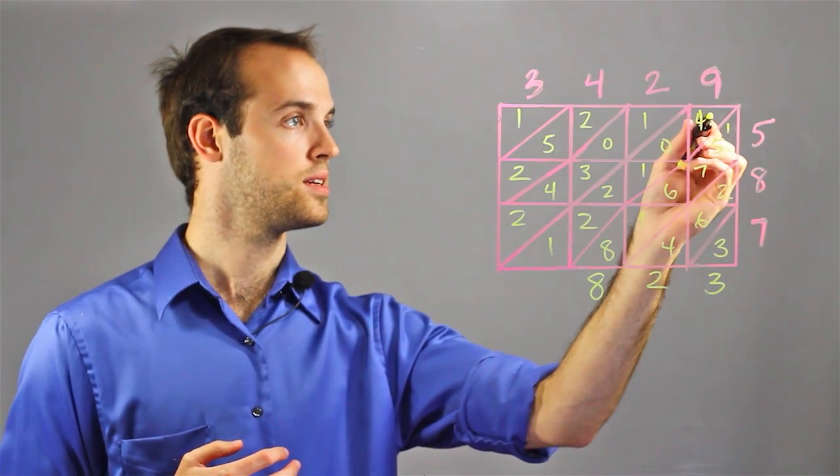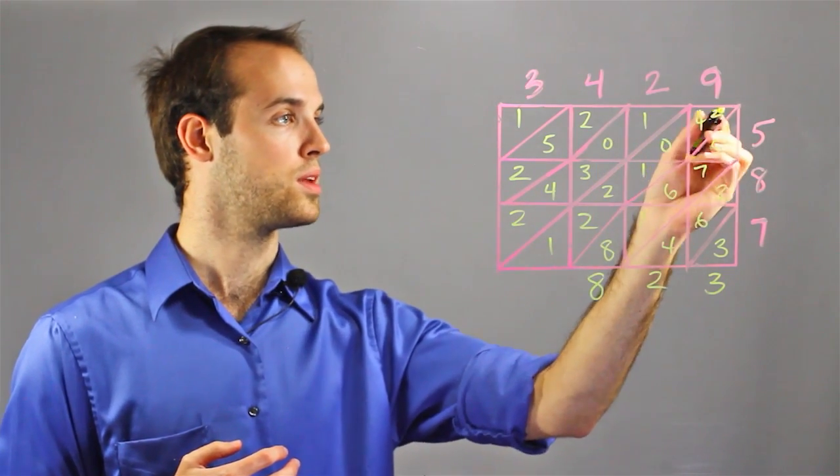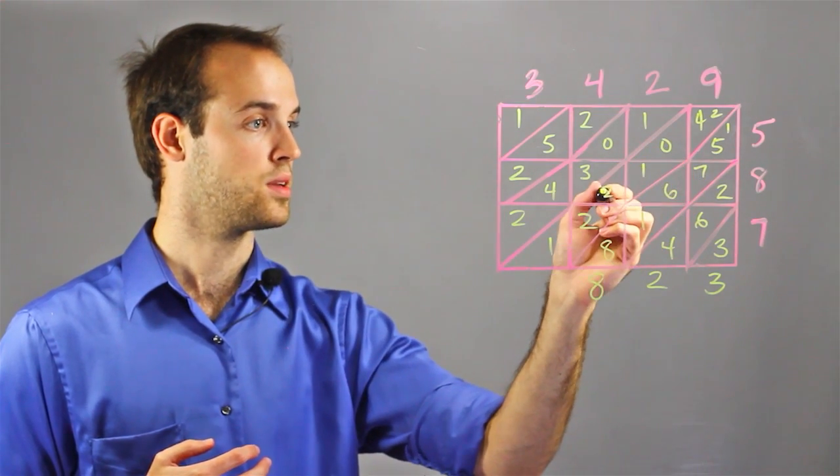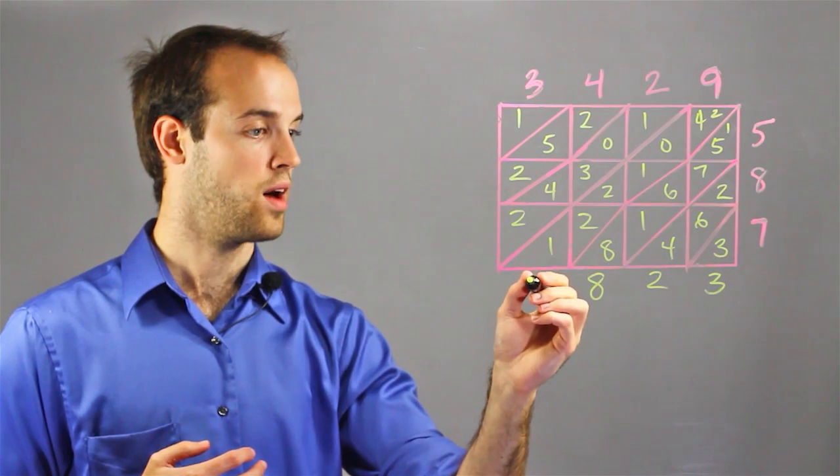So there's my 8, 1 into 2, 4 plus 2 is 6, plus 0 is 6, plus 1 is 7, plus 2 is 9, plus 3 is 12.